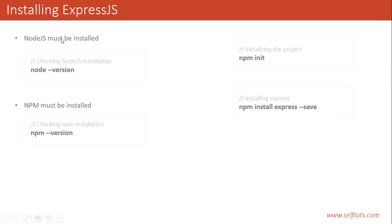This was all about how to install Express in your project. The prerequisites are Node.js and npm — you can verify they are correctly installed by running node -version and npm -version. Then initialize the project with npm init and install Express with npm install express --save. If you like my channel please subscribe, and if you like this video please give a thumbs up. Thank you.